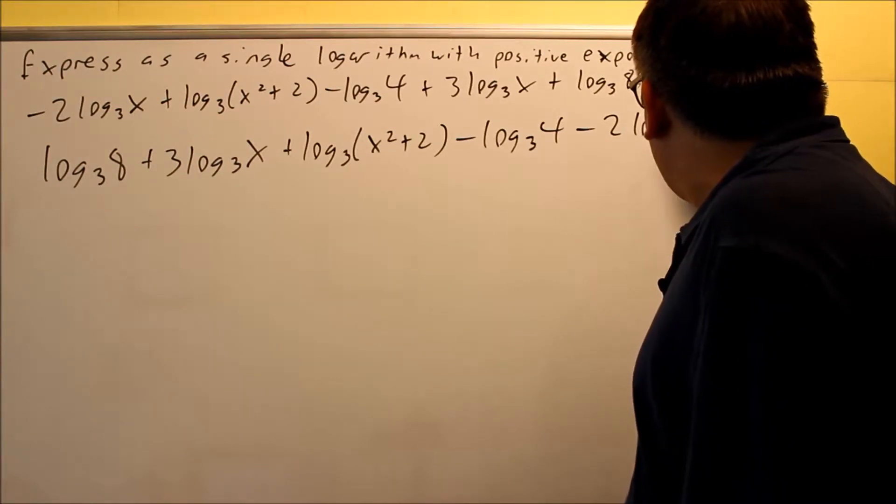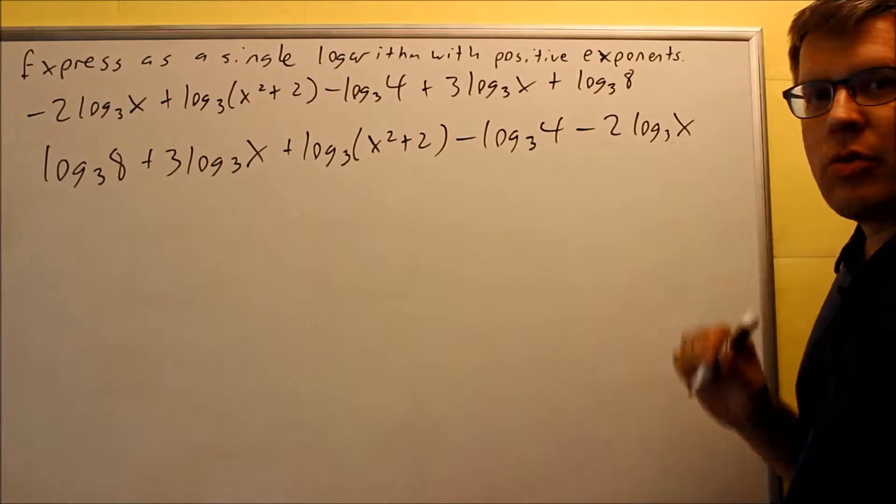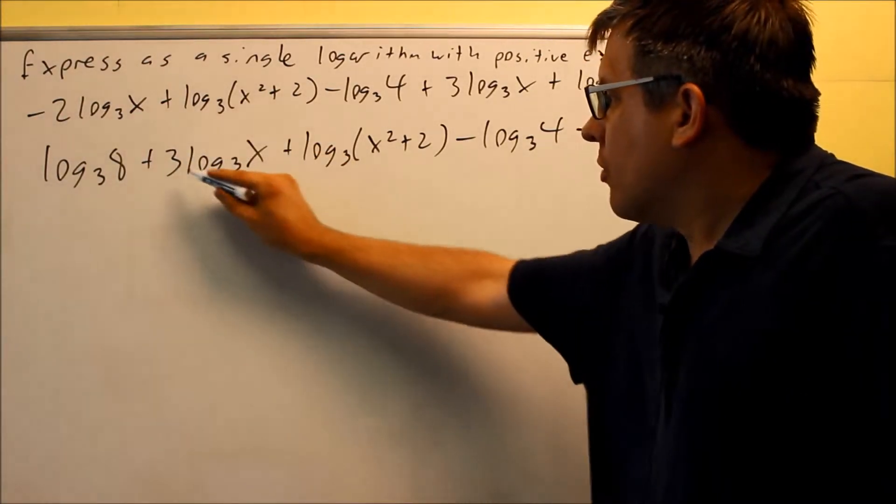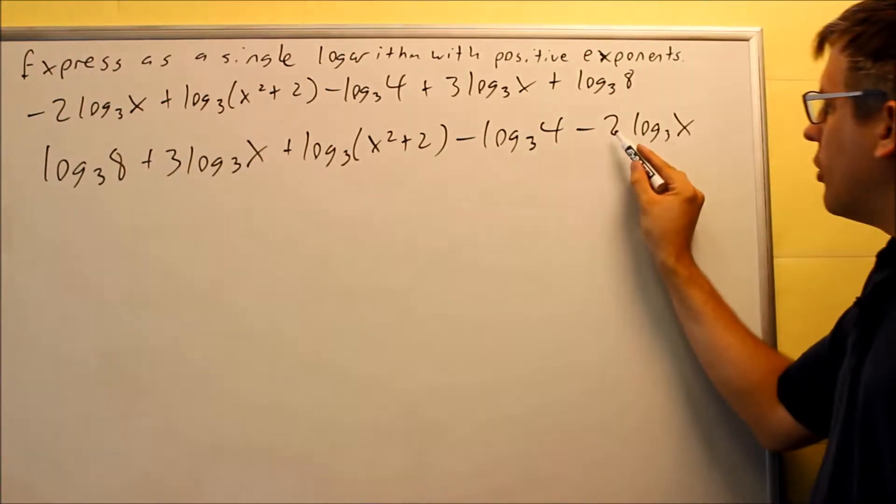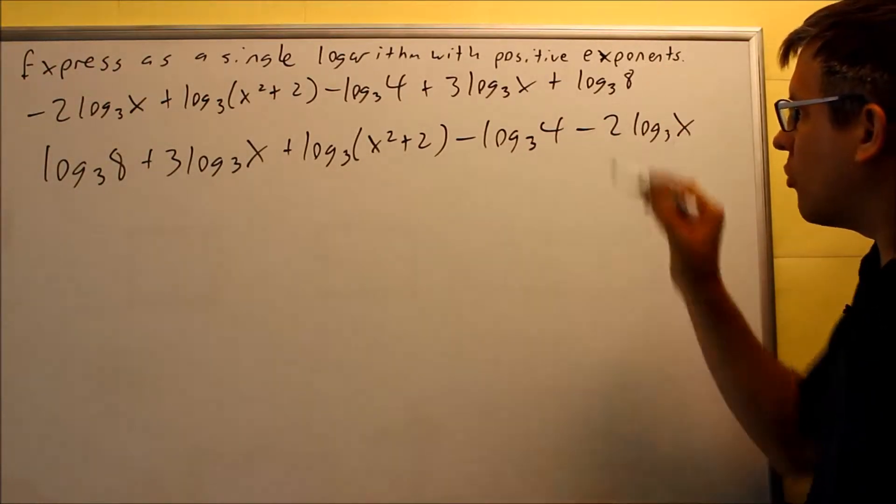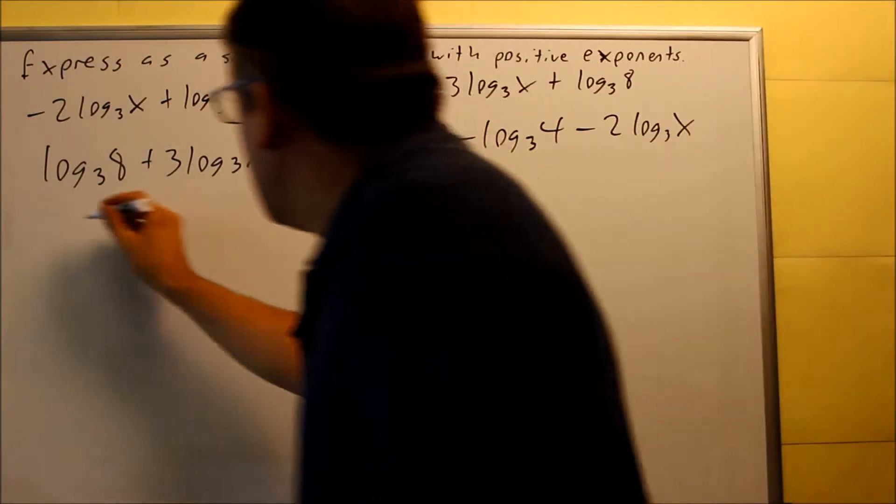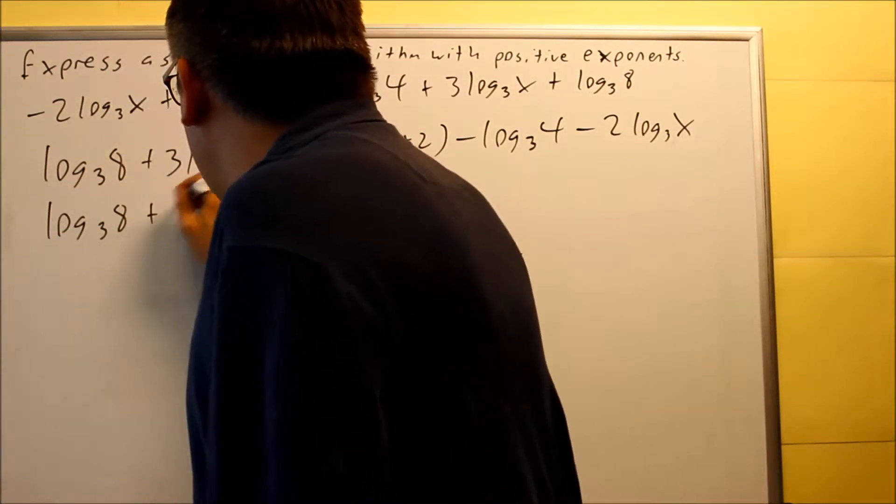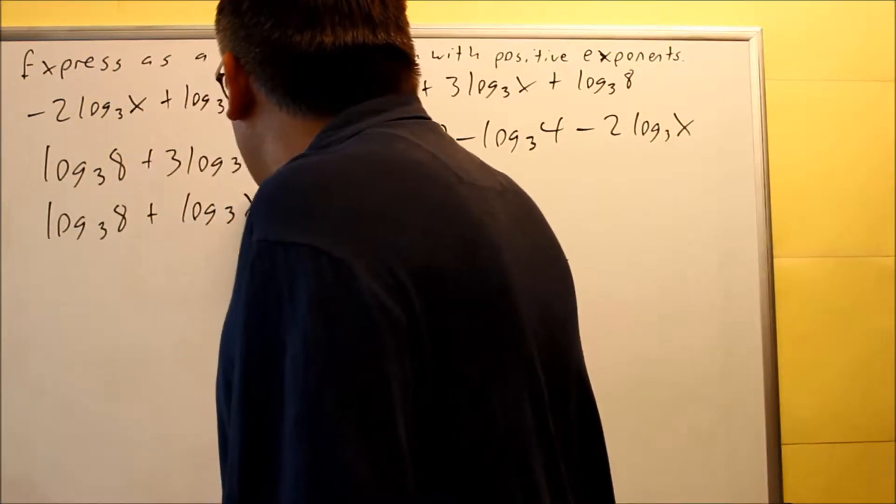So now I have them all grouped together. The next thing we're going to do is we're going to move these powers up. So the three I'm going to move up here, and the two I'll move up here. Again, I'm not going to move the negative sign up with it because I want to write it with positive exponents. So first I'll do log₃ 8 plus log₃ x³.